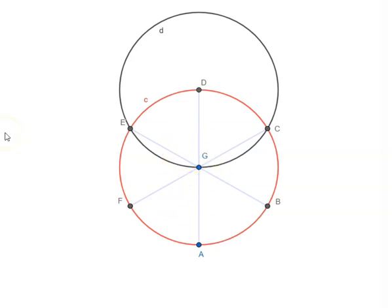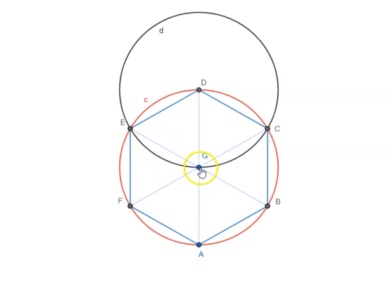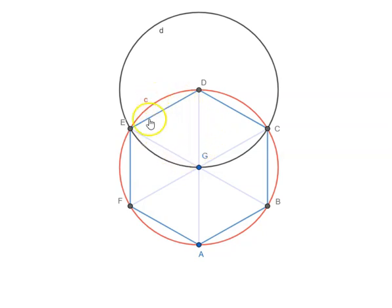Let us join these points and look at triangle EDG. In circle D, ED equals DG because they are both radii of circle D. Similarly, in circle C, EG and GD are radii of circle C. So these two are equal and these two are equal, meaning all three sides of this triangle are equal to each other, and equal sides have equal opposite angles.